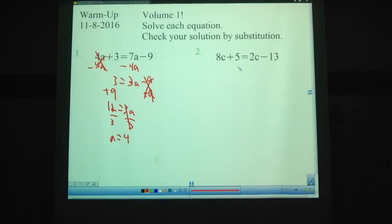Problem number 2: 8c plus 5 equals 2c minus 13. Get rid of this 2c. This one doesn't end up exactly ideal. You get 6c plus 5 equals negative 13. When we subtract that 5, we have a negative we're subtracting from it, which some people get confused by. I apologize for that, but that's just how this problem worked out. 6c equals negative 18. Divide by 6. C equals negative 3.